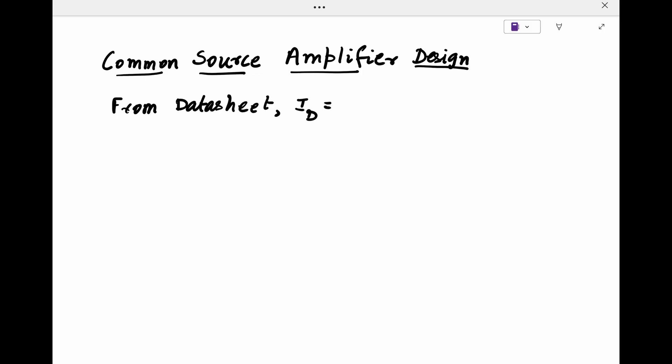From the datasheet of 2N7000, we need to find a point in saturation for the MOSFET and deduce the VGS, VDS, and ID.